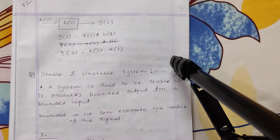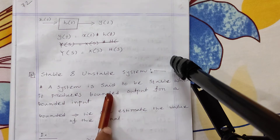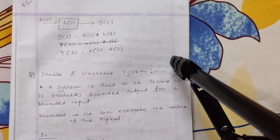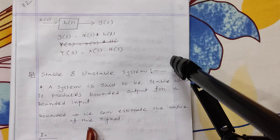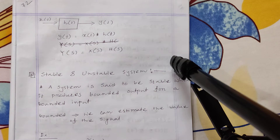We will talk about stable systems and unstable systems. A system is said to be stable when it produces a bounded output for a bounded input. Bounded input-output means we can estimate the value of the signal — we can determine the value of the amplitude. We can determine the value of the ramp signal and the value of the output.